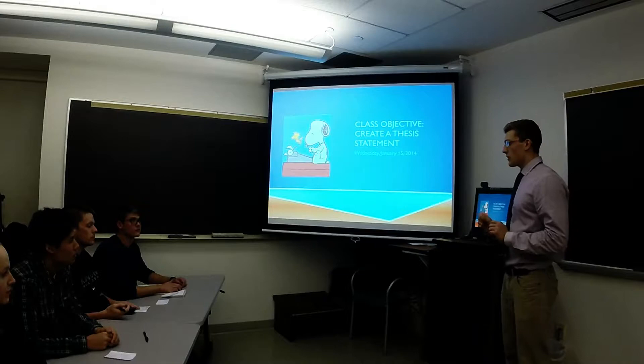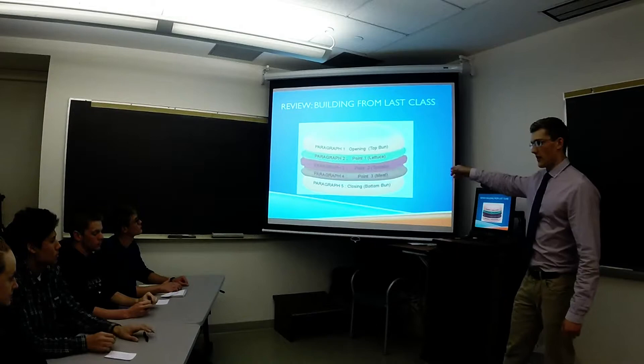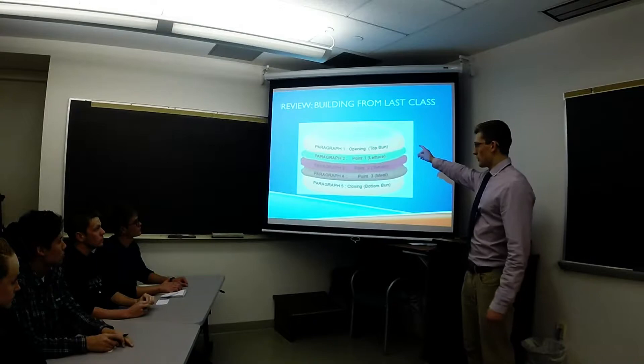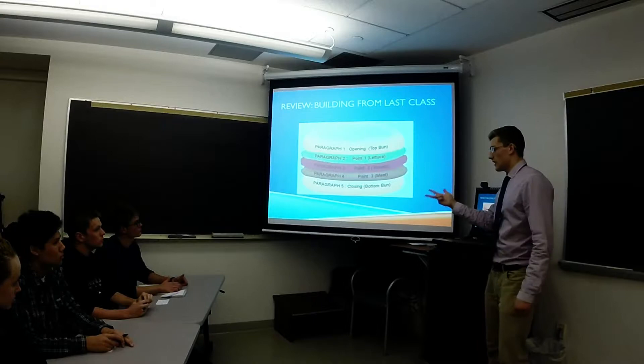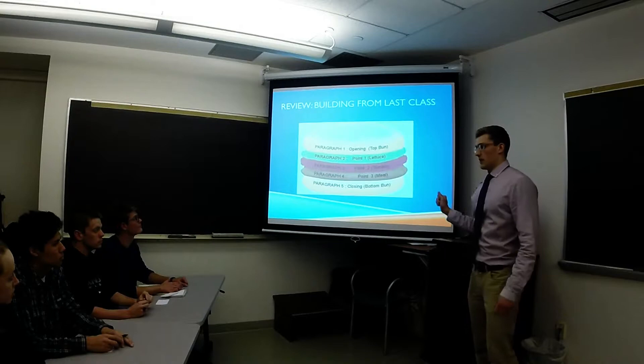Now, let's start by reviewing from the last class. Does anybody remember what we talked about? Jacob? Five paragraph essays. That's right, we talked about five paragraph essays. We used this hamburger diagram to demonstrate. So we've got our first paragraph, the opening paragraph, which is part one. We've got our lettuce, tomato, and meat as our three supporting paragraphs in the middle. Then we finish off with our last one, our fifth paragraph.